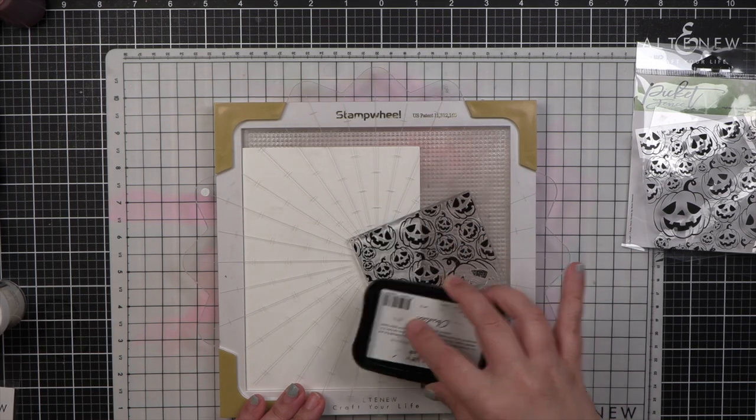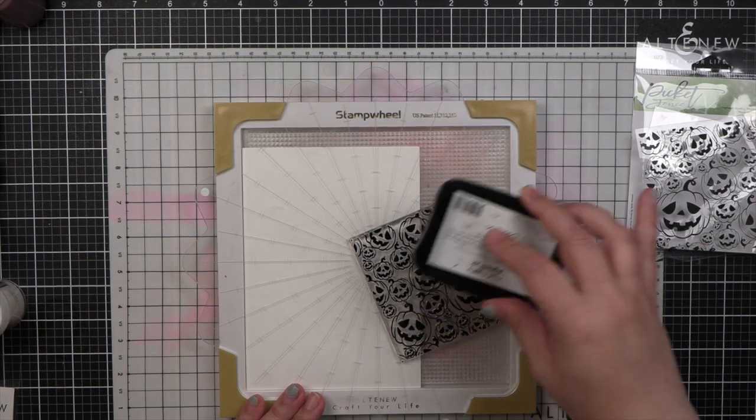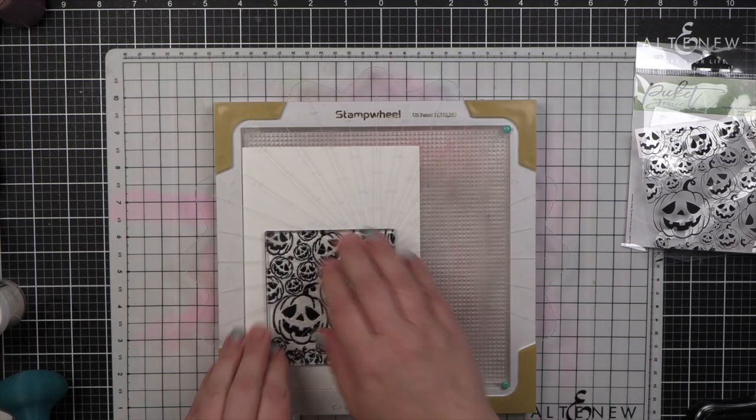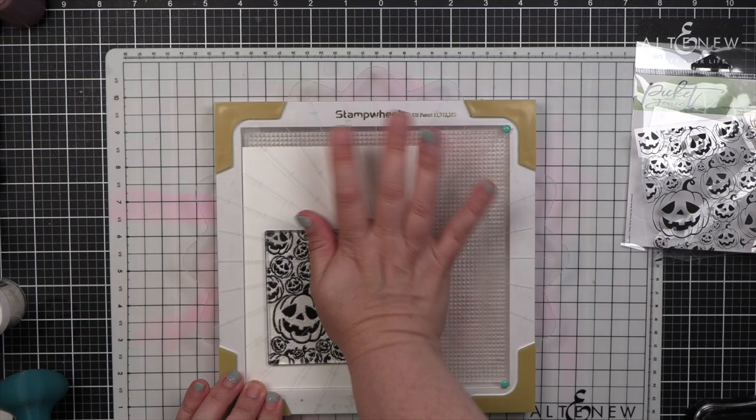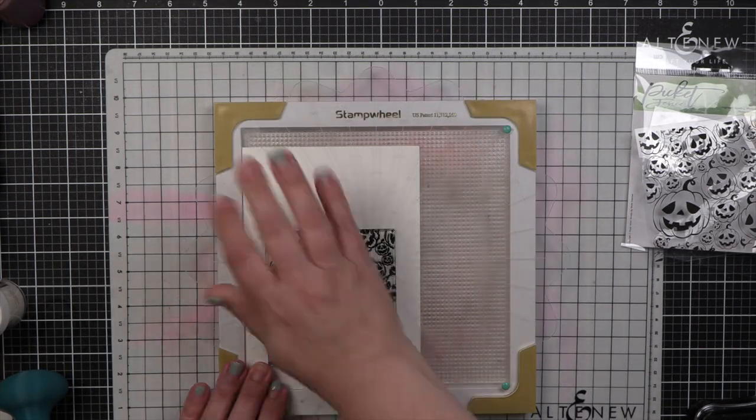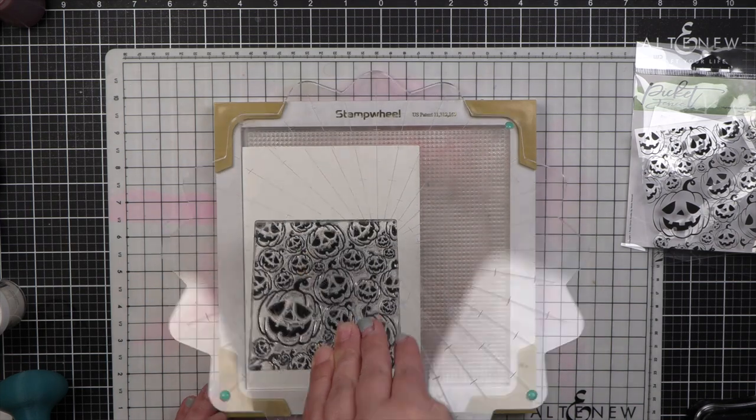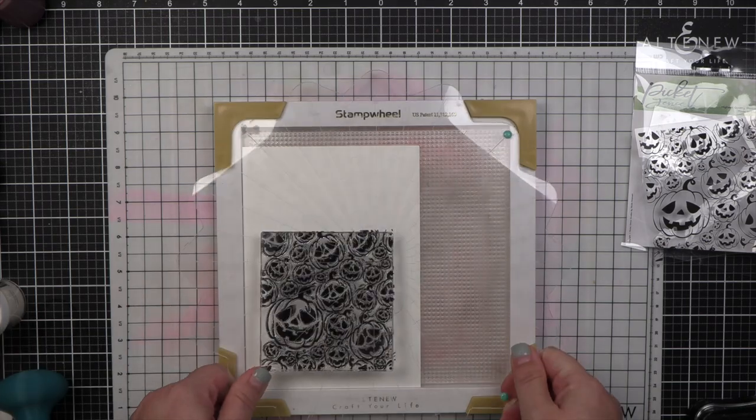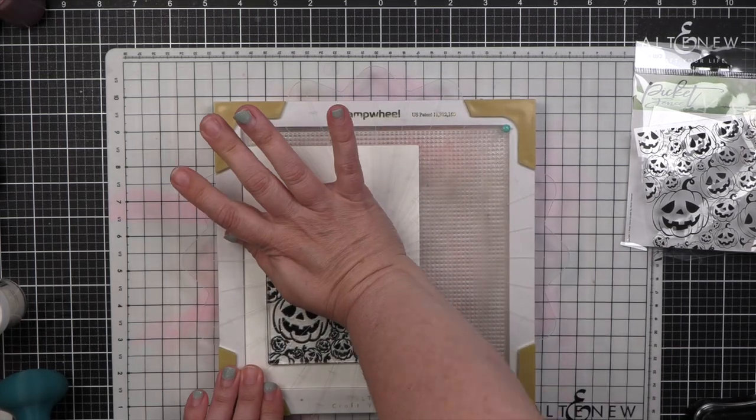I am stamping on this with Altenew Obsidian Ink, and thank goodness for the stamp wheel. This is a really big stamp with a lot of images, and I probably stamp this about four to five times using that Obsidian Ink in order to get that nice clear image.